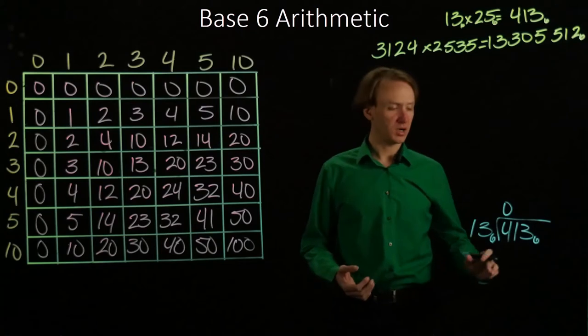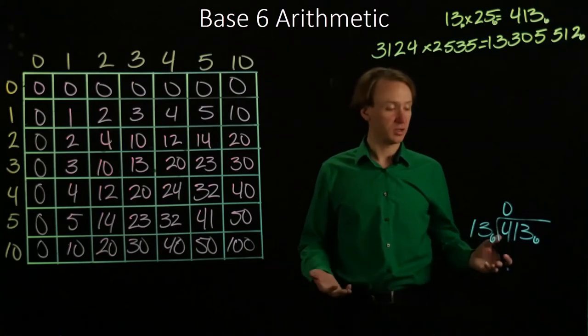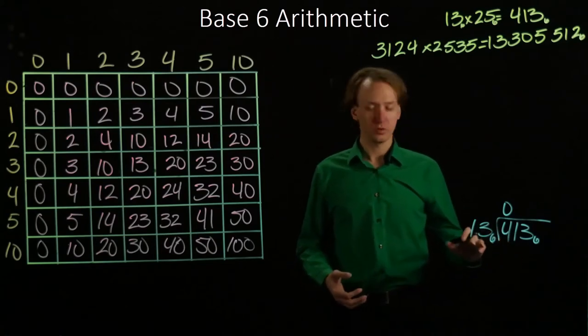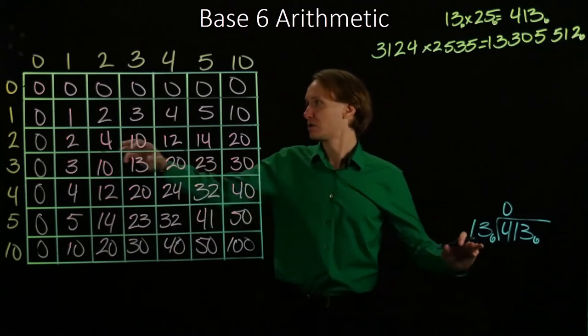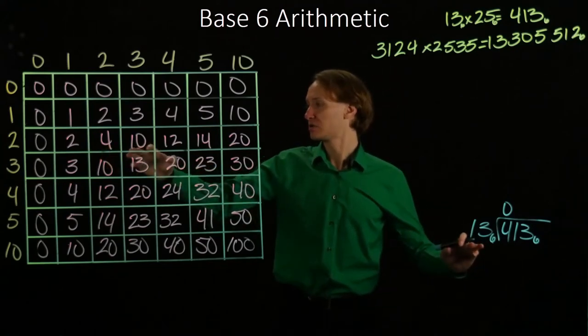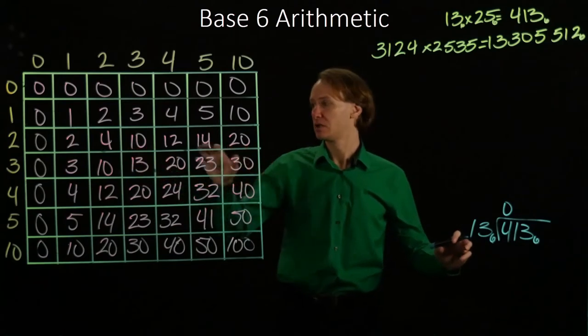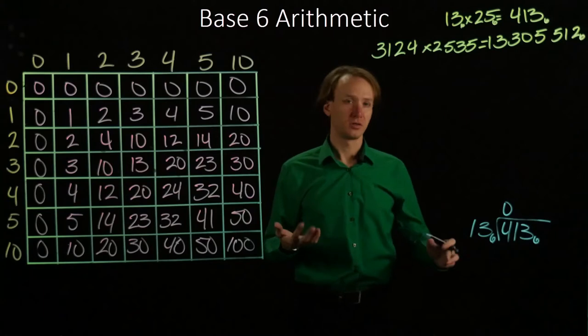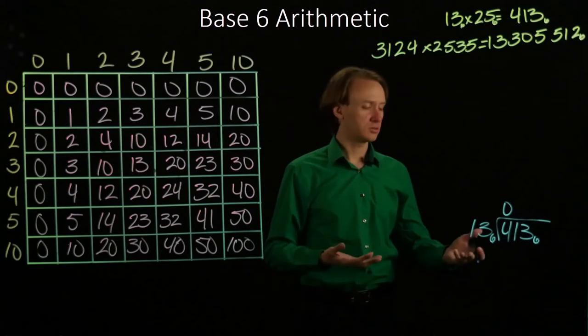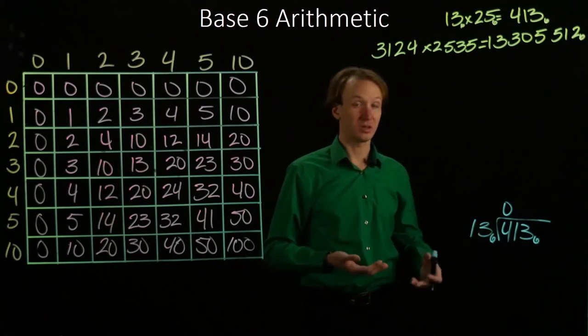So let's consider what happens if I have 2 and 3. So if it's 2, then I get 2 times 13. So that would be 2 times 3, which is 10, plus 2 times 10, which is 20. So that would give me 30. 30 is less than 41, so 13 divides into 41 at least 2 times.